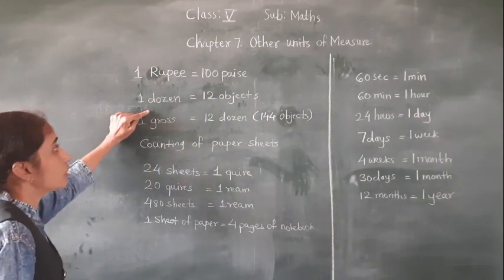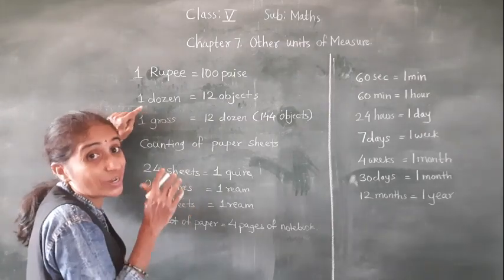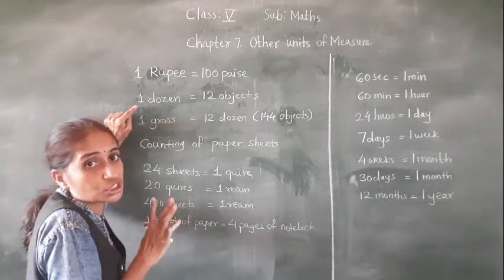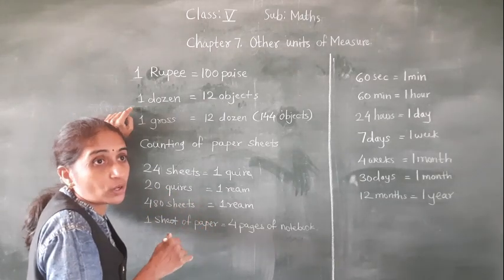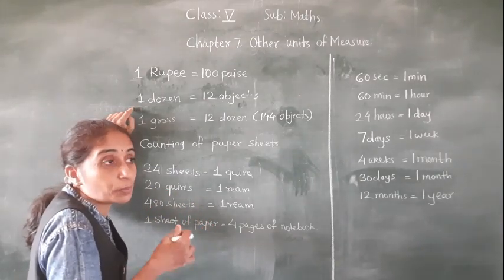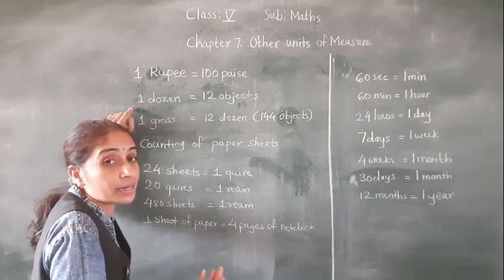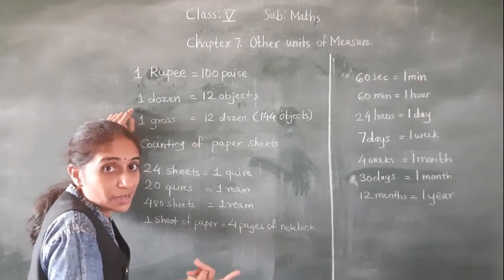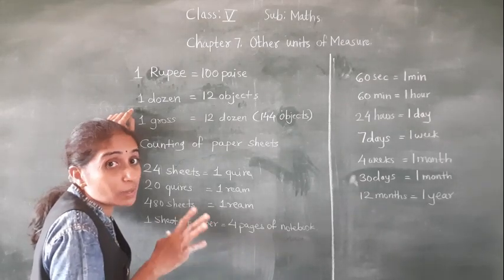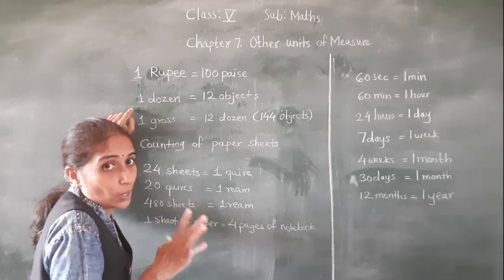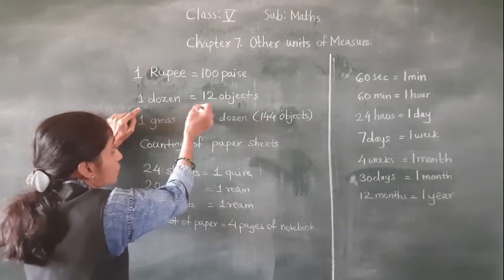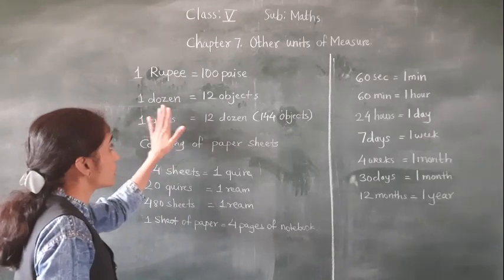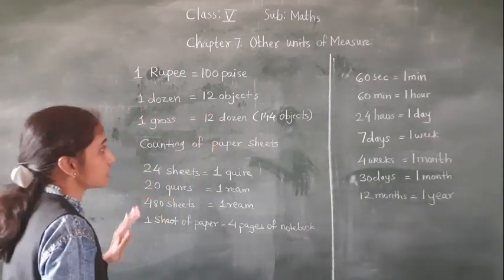Now, 1 dozen. 1 dozen means how much? 12 objects. See, if you go to the market and want to purchase bananas, you will ask: give me 1 dozen bananas. So how many bananas? 12 bananas. 1 dozen is equal to 12 objects.